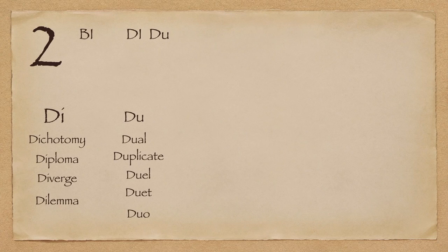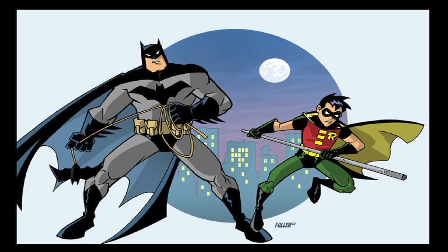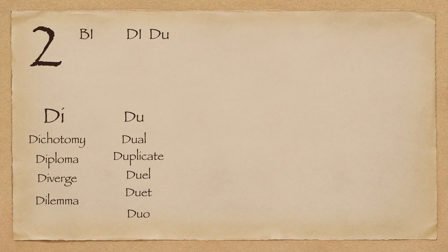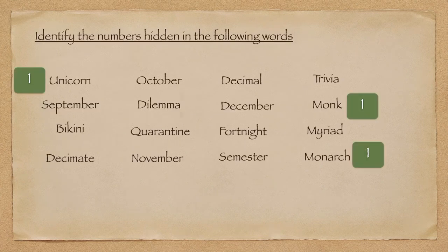Very similar to the word duet is the word duo — a pair of people or things, especially in music or entertainment. For example, the duo of Laurel and Hardy, the dynamic duo Batman and Robin, or two batsmen with a good partnership. So that pretty much covers it for the number two, with the prefixes being bi, di, and du. This is not a comprehensive list, but now you know the prefix means two, so whenever you see such a word, guessing the meaning will be slightly easier.